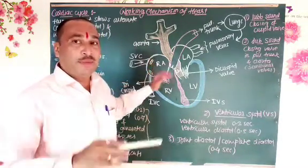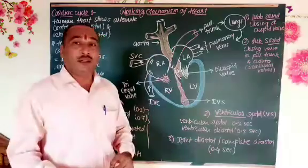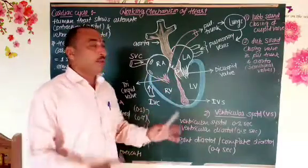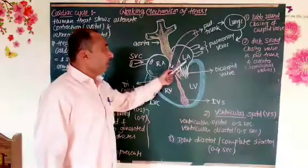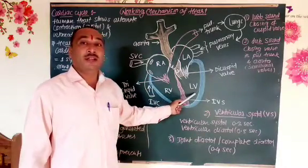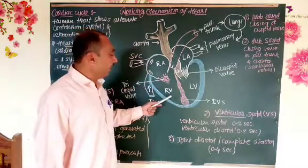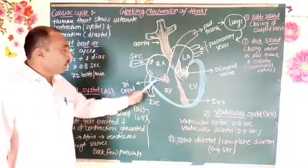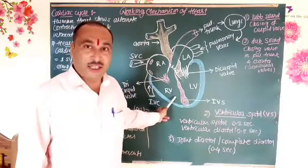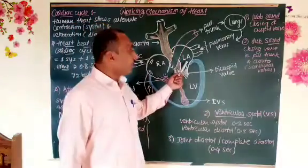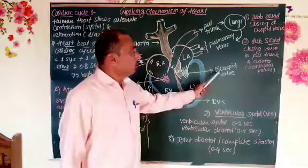The pacemaker, located at the opening of the superior vena cava, gets excited when blood fills both atria. The SA node — sinoatrial node — generates waves of contraction which spread over both atria. Both atria contract simultaneously, so blood from both atria is released into both ventricles. Deoxygenated blood from the right atrium is released into the right ventricle through the tricuspid valve.